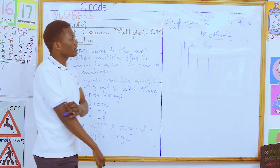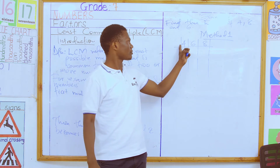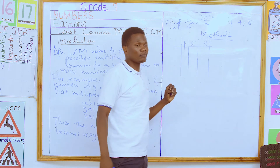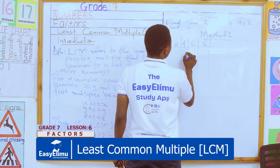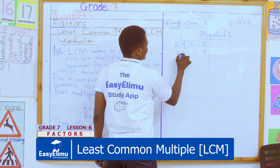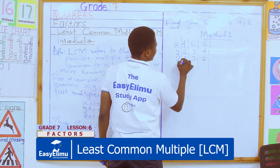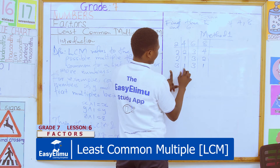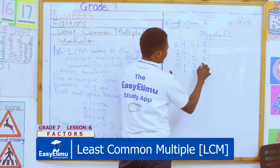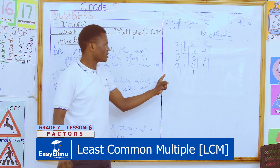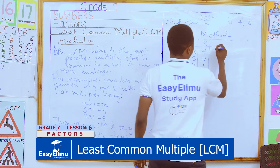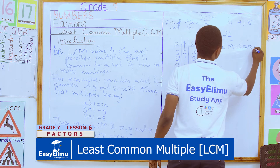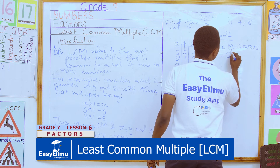We start with the least prime number that can divide any of them. With LCM, you pick the least prime number so long as it can divide any of the given numbers. Here our least prime is 2: 2 into 4 is 2, 2 into 8 is 4, 2 into 6 is 3. Next, 2 into 2 is 1, 2 into 4 is 2, we retain 3. Then 2 into 2 is 1, we retain 3, retain 1. Next, 3 into 3 is 1, retain 1, retain 1. Once we reach 1, 1, 1 there is no need to continue.